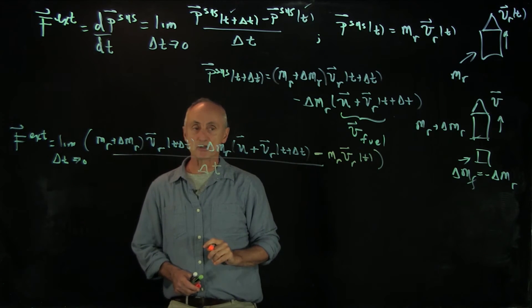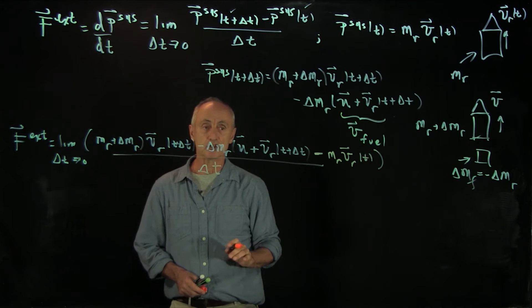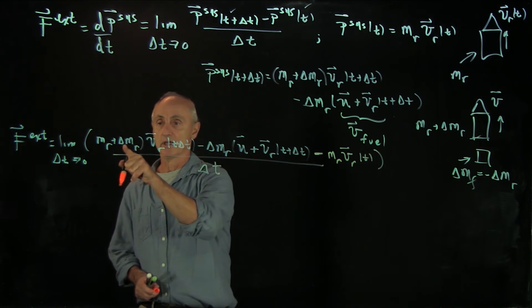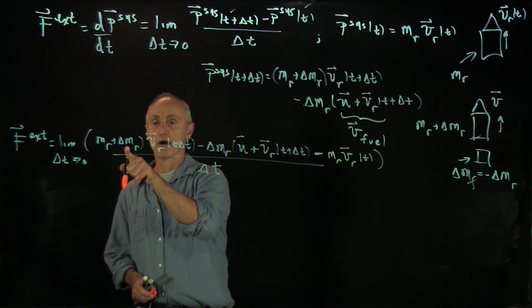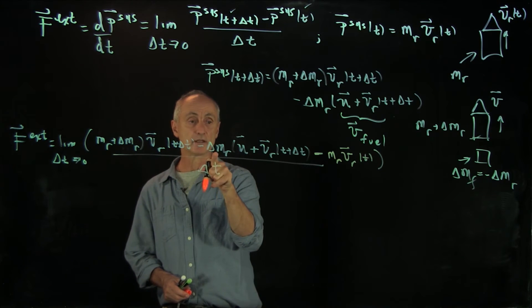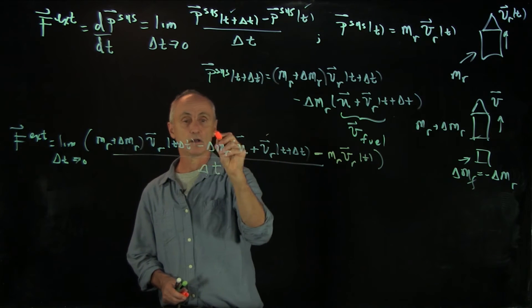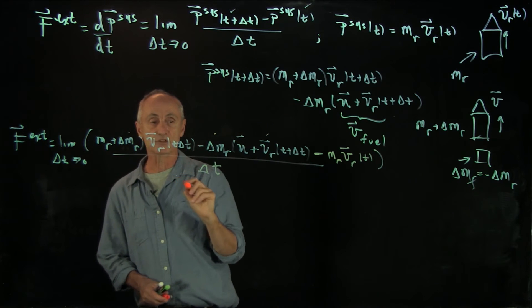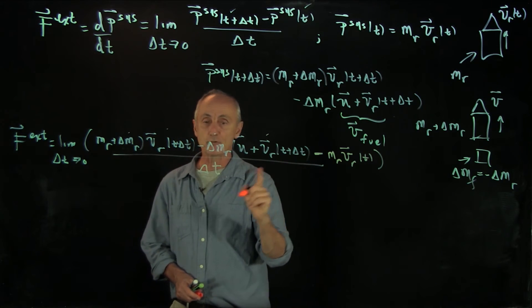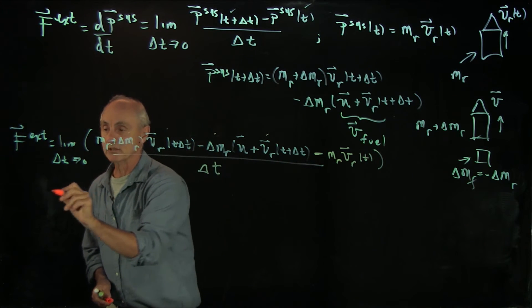Now, let's look at this expression first, because there's some very nice simplifications. The first thing we can see, let's look at this term delta mr times v of r. Notice we have minus delta mr v of r here. So those two terms cancel, and we're just left with three other terms.